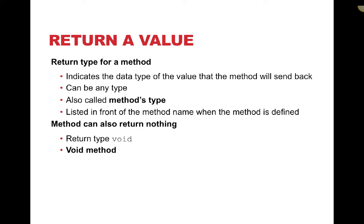One of the great things about using methods is that we can return a value to use with our program. The return type for the method tells you what kind of data type the value will be that the method sends back. It can be any type — string, int, double, or a particular object like a bank account or cash register. It is listed in front of the method name when the method is defined. You'll have to decide right away if this method is going to return something and what type. Methods can also return nothing — they can have a return type of void, which just means it does stuff but doesn't return any value back to where it was called.